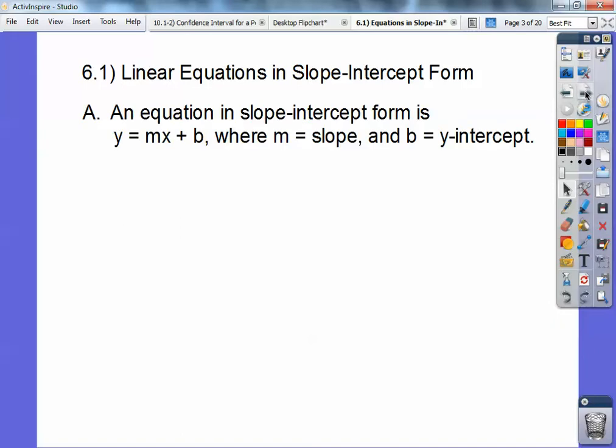And then you're going to pause it again. So an equation in slope-intercept form is y equals mx plus b, where m is the slope and b is the y-intercept. We've done this before, so this lesson is going to go fast.